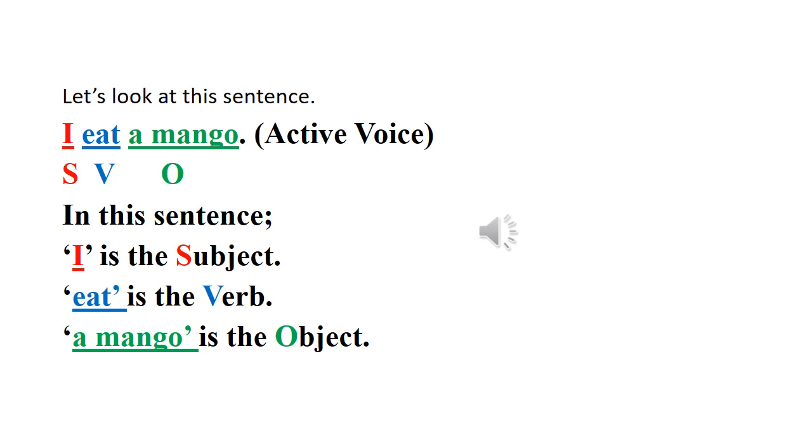Subject, verb, object. This is the sentence pattern. S, V, O. Subject, verb, object. Doer, then verb, then object.